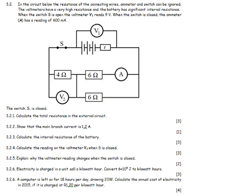In the circuit below, the resistance of the connecting wires, ammeter and switch can be ignored. The voltmeter has a very high resistance, and the battery has significant internal resistance. When the switch is open, the voltmeter reads 9 volts. When the switch is closed, the ammeter has a reading of 600 milliamps. I'm going to identify what's going on - from the battery until I hit a resistor. What becomes very apparent is that I have a parallel network here, and the 4 ohm thing is in series.